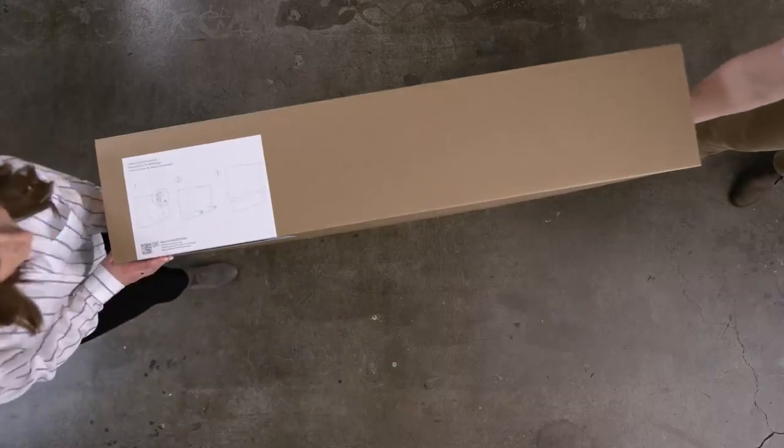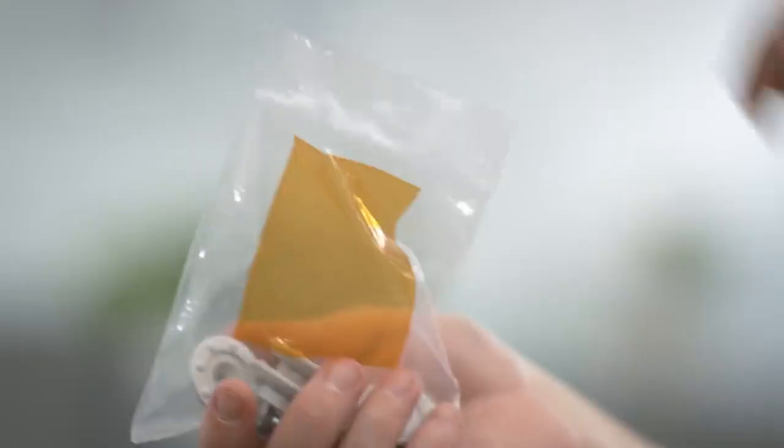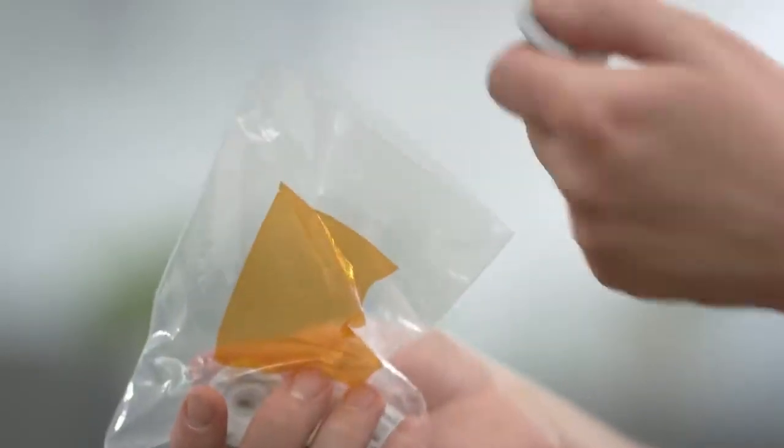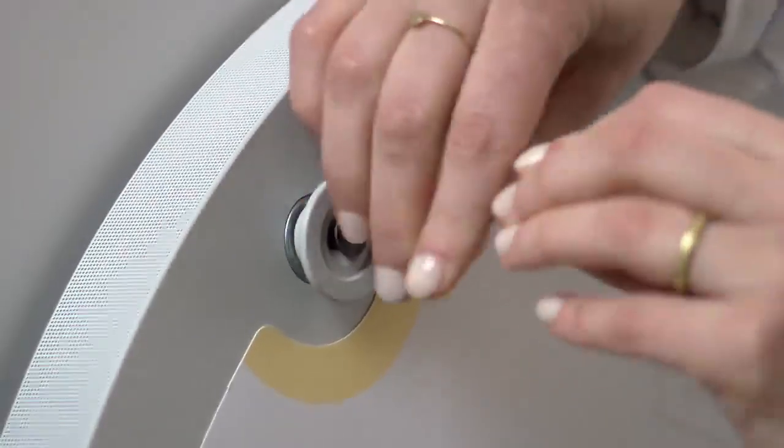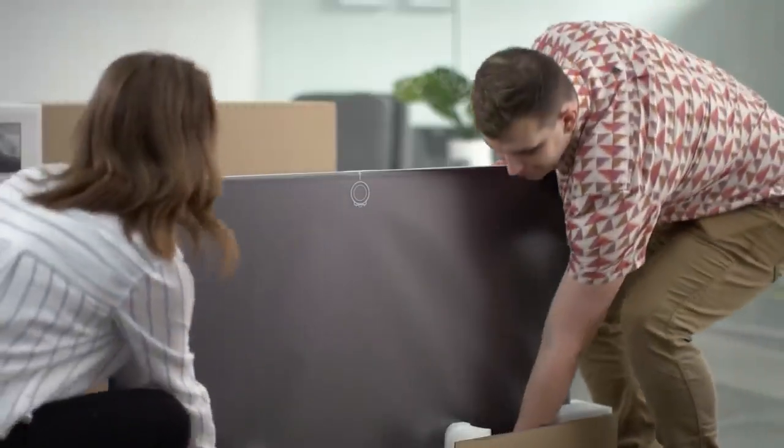If you haven't already prepared your Surface Hub for mounting, go ahead and do so now. Once you're ready, open the orange bag and attach the four hardware mounts to the back of the device.